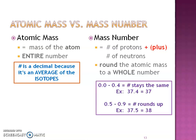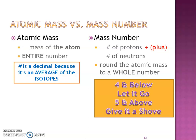Just as a reminder about rounding: if you have a decimal in the 0.0 to 0.4 range, that number stays the same — so 37.4 just stays 37. However, if the decimal is in the 0.5 to 0.9 range, we round up — so 37.5 equals 38. A lot of math teachers like to say: four and below, let it go; five and above, give it a shove.